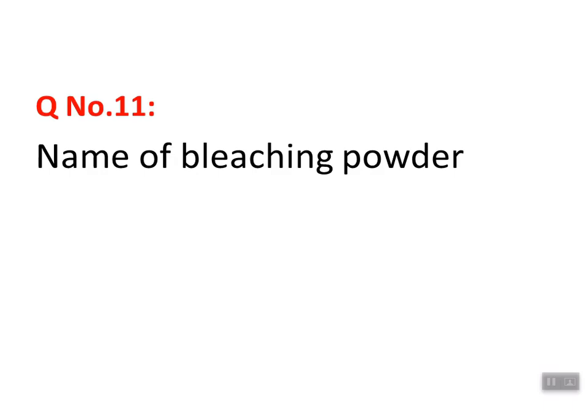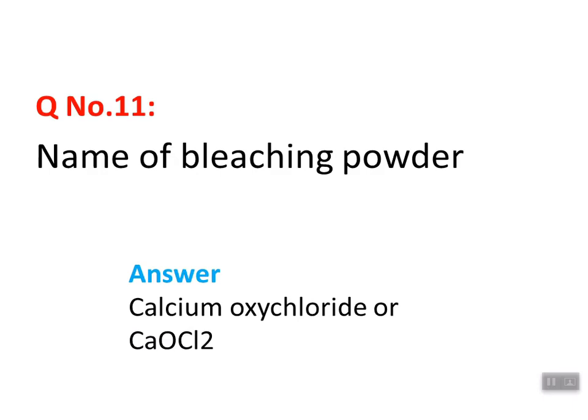Question number eleven: 'Name of the bleaching powder.' This is a chemistry-related question. The name of bleaching powder is calcium oxychloride, and its formula is CaOCl₂. The correct answer is calcium oxychloride — also commonly called bleaching powder.